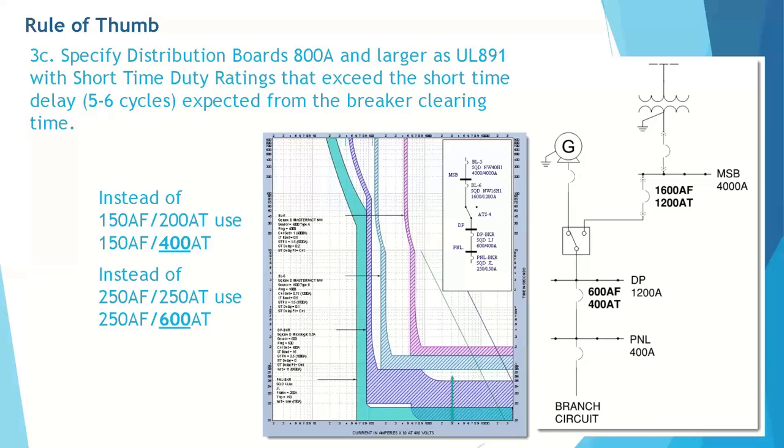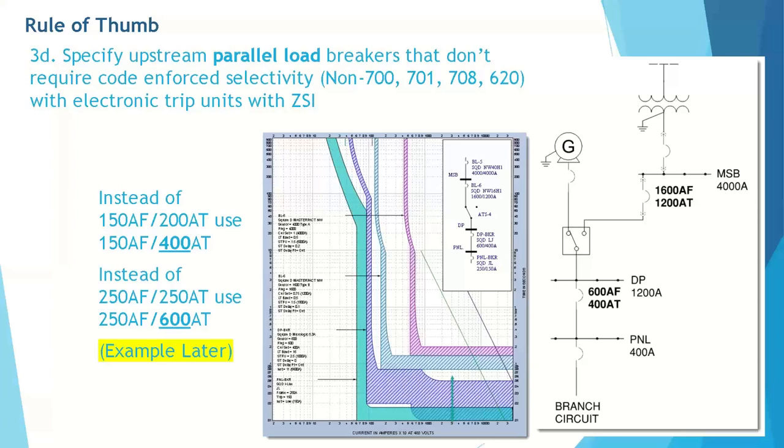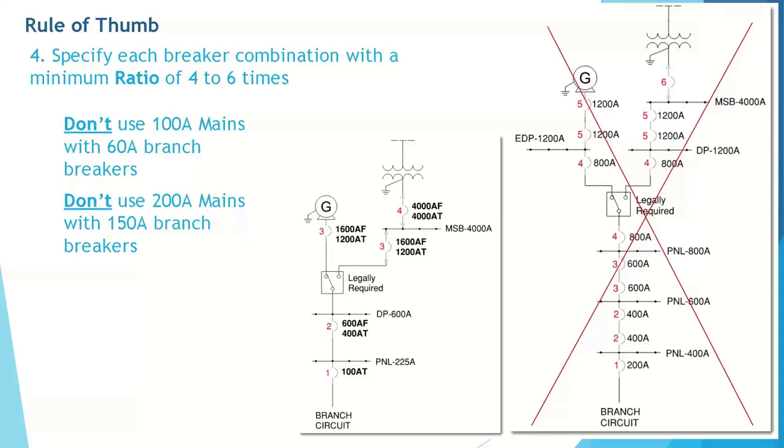For example, instead of using a 200 amp frame and 150 amp trip, you may need to specify a 400 amp frame with that 150 amp trip, or instead of a 250 amp frame, you may need to go up to a 600 amp frame so that you can get a higher instantaneous. For 3B, this is to specify breakers that have a high instantaneous or are capable of having the instantaneous turned off completely. You can see here that this specific breaker can have the instantaneous turned off. For 3C, instead of a typical lighting class panel board, you may need to go up to UL 891 boards to get a higher short time duty rating, ensuring that they exceed the short time delay that you're expected for clearing times.